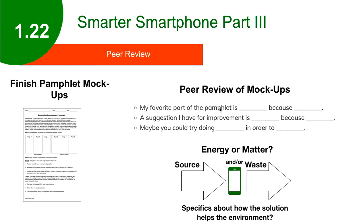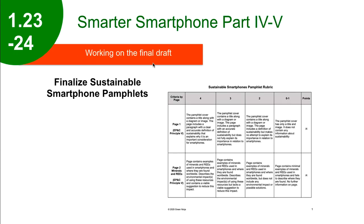In addition to prompts about the communication in the brochure, we encourage students to analyze the solution itself. Can they identify how it influences the source or waste streams? And has the group given enough specific details about how their solution helps the environment? Days 23 and 24 are work days — students self-assess using the project rubric, revise their brochures based on peer feedback, and prepare their final submission.